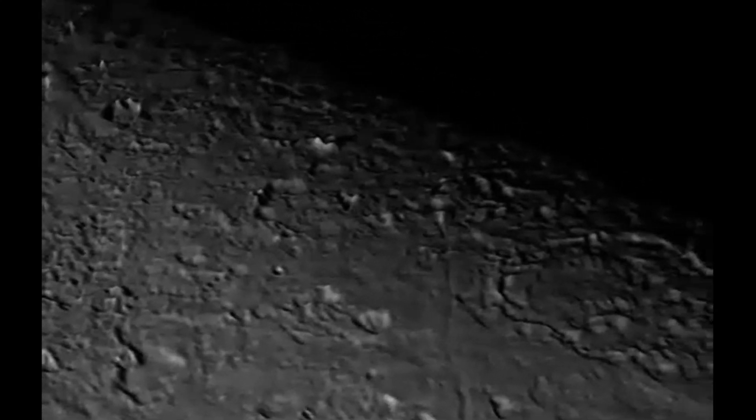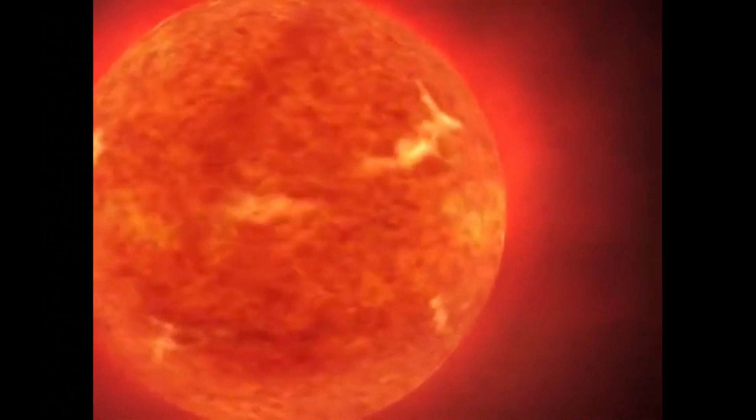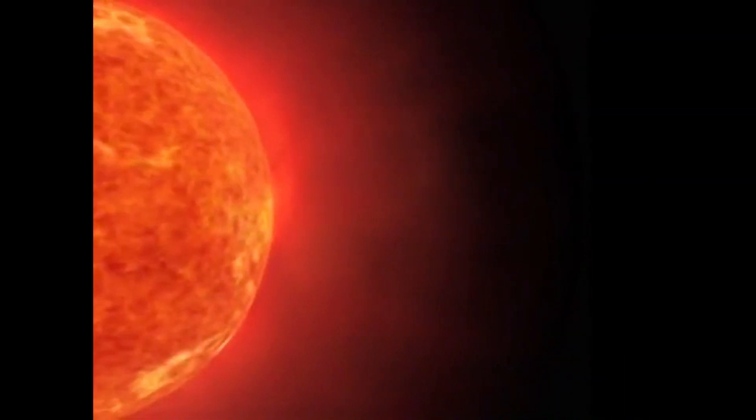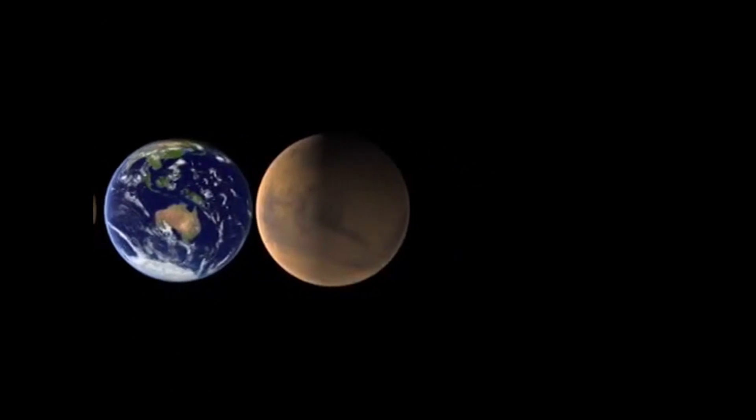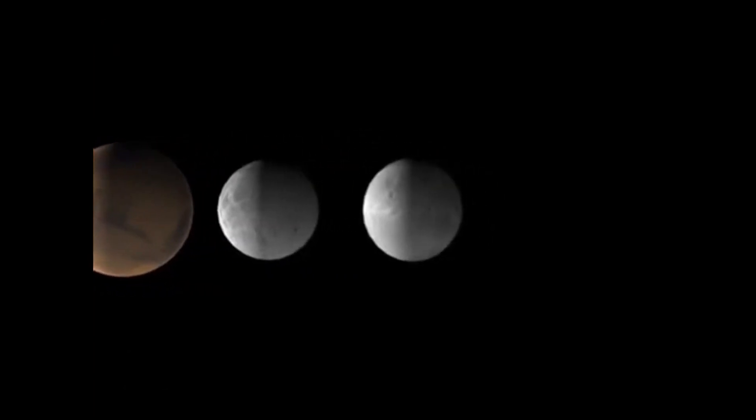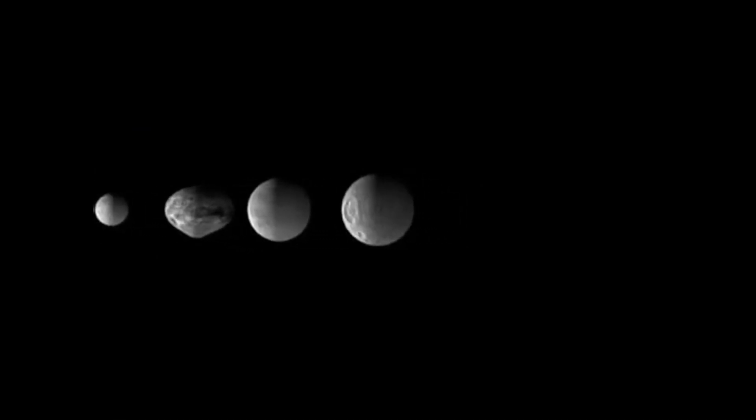One theory is billions of years ago Triton was not a moon at all. It grew up in a region of space way beyond Neptune in the Kuiper belt. Perhaps Triton ended up in the inner edge of this region and ventured close enough to Neptune to be drawn in by its gravity.